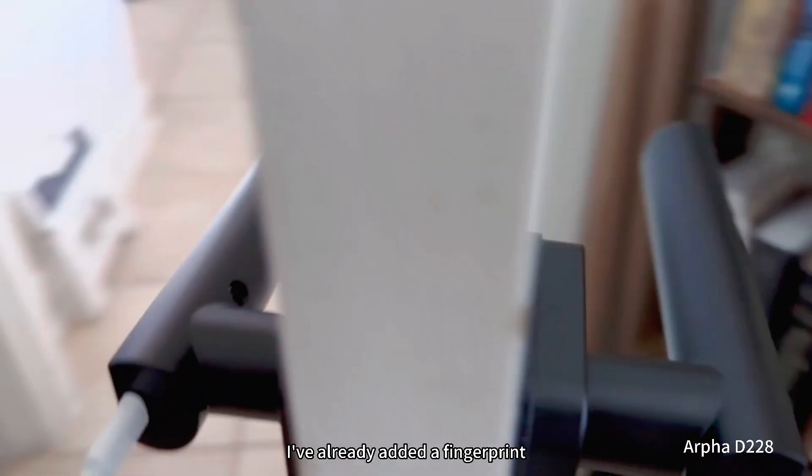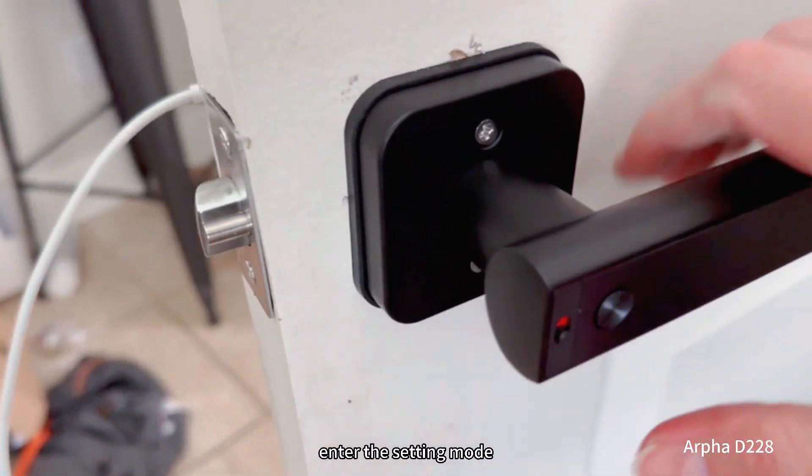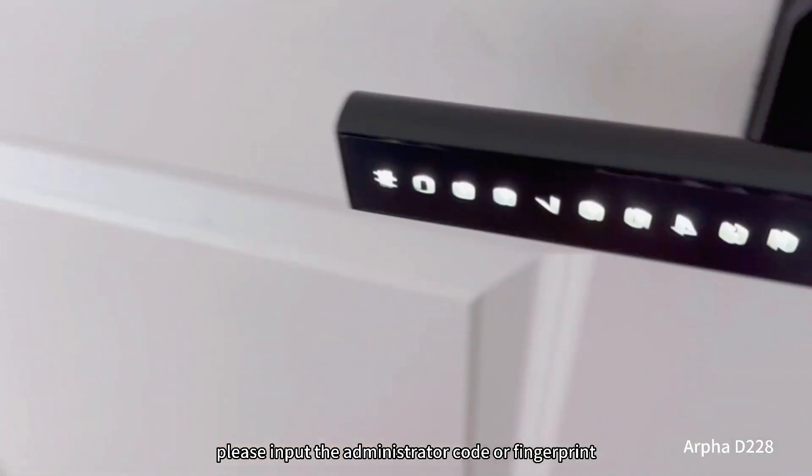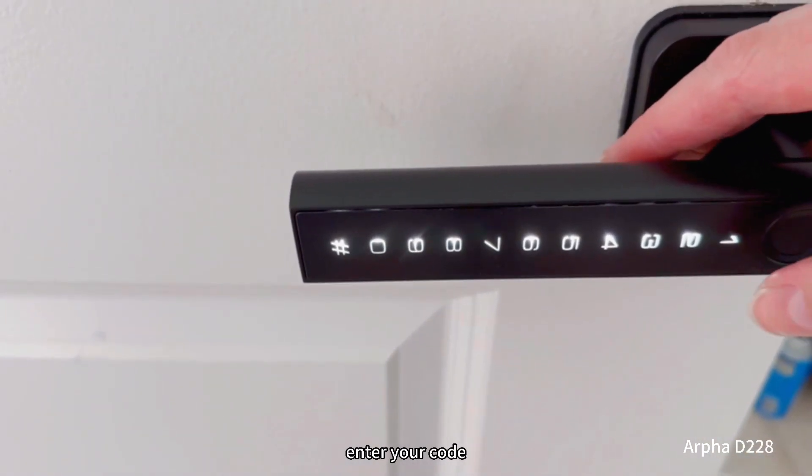So to set it up, I've already added a fingerprint, but it's really easy. I haven't downloaded the app yet, but to set it up, you hit this button. Enter the setting mode. Please input the administrator code or fingerprint. The lights light up only when you're in setting mode or when you're trying to enter your code in.